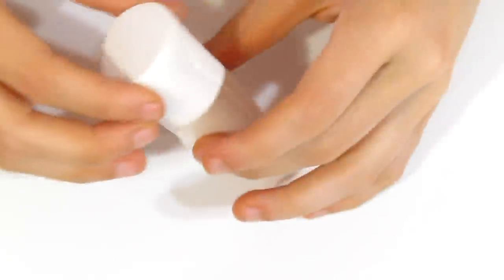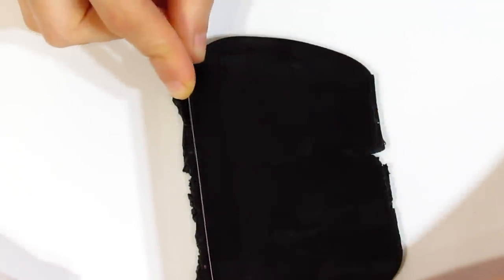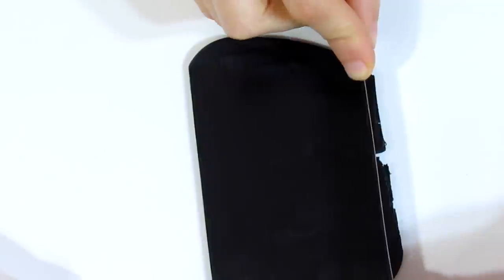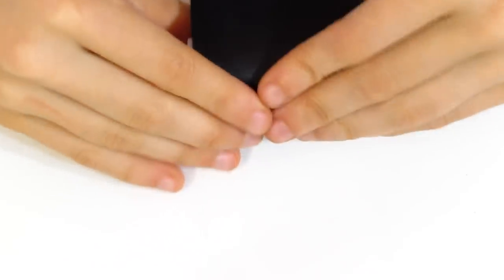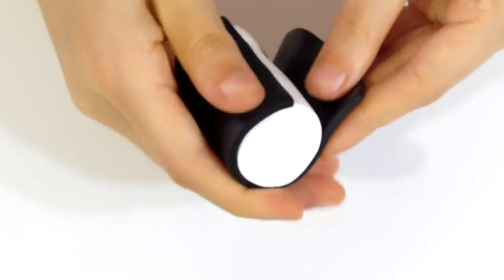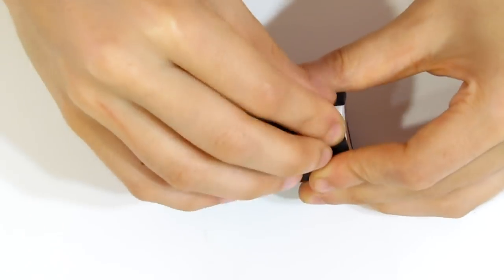So we're going to create the Bullseye Cane first. You need a nice log of white like so, and this is probably about two centimeters in diameter. Then you're going to take some black, and I'm just going to trim up these edges. This is a sheet of black that has been rolled out to about two millimeters thick, which is the thickest setting on my pasta machine.